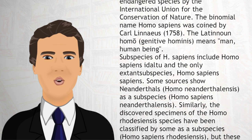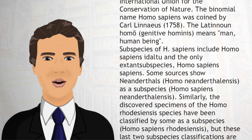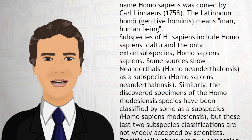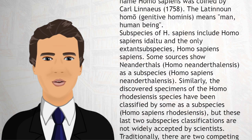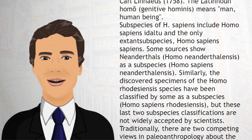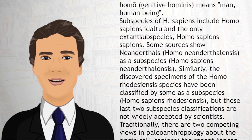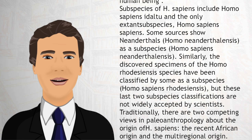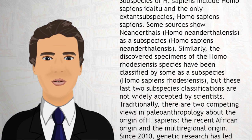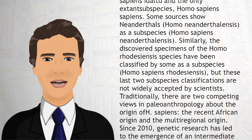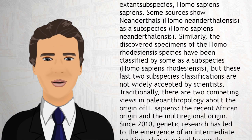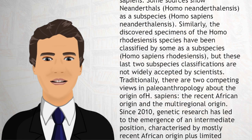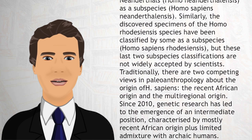Some sources show Neanderthals, Homo neanderthalensis, as a subspecies, Homo sapiens neanderthalensis. Similarly, discovered specimens of the Homo radicensis species have been classified by some as a subspecies, Homo sapiens radicensis, but these last two subspecies classifications are not widely accepted by scientists.